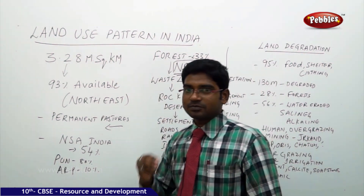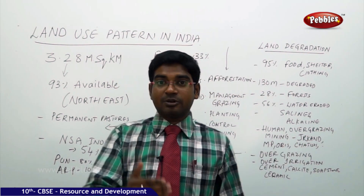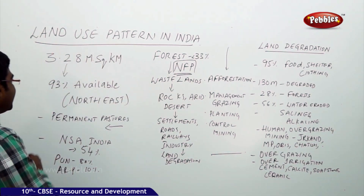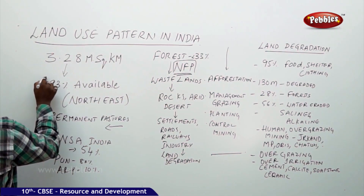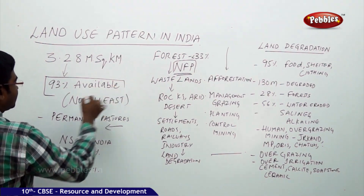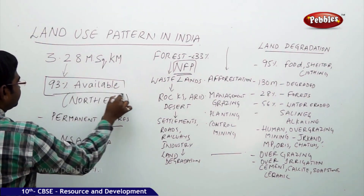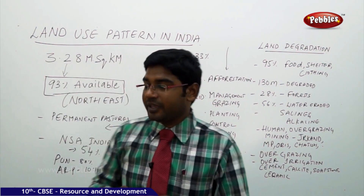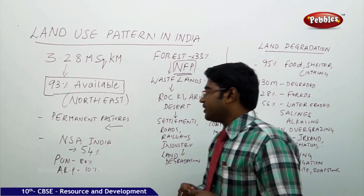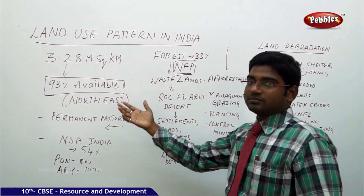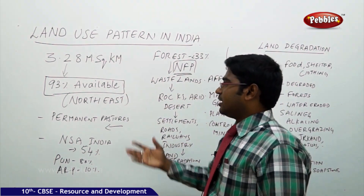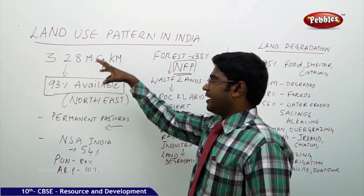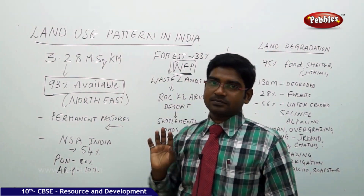So it is estimated that 93% of land only is being used for Indian purposes. This 93% of land has been contributing significantly for us, because we all come under the category of this 93% of land available — for us to grow, to live, and to stay.